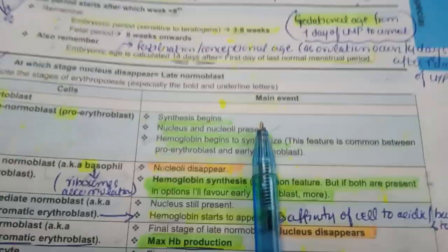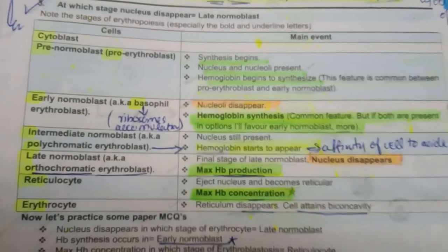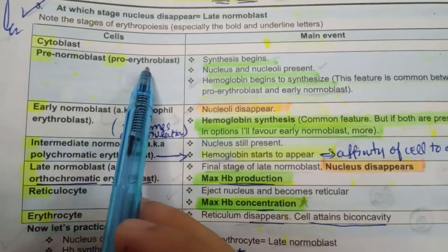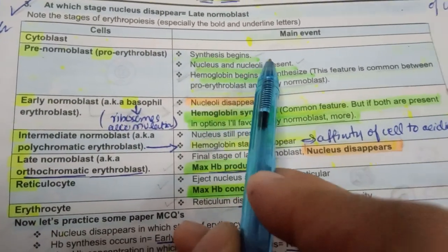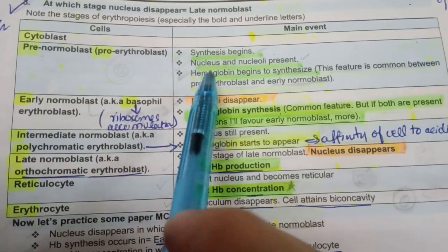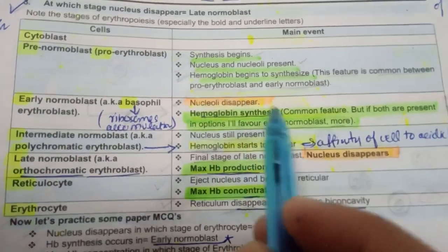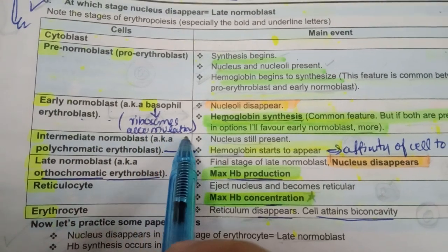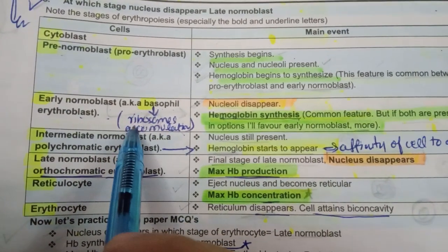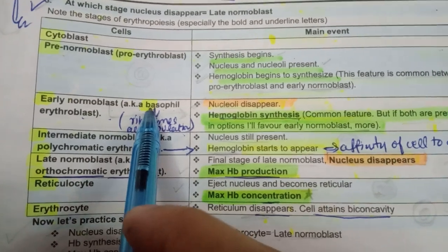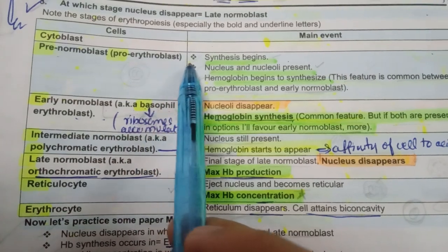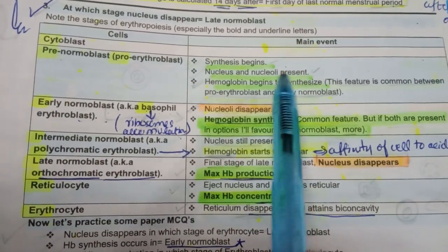The stages of erythropoiesis: the first stage is the proerythroblast — no major event here, just a ball of cells. Then we have the pre-normoblast, also known as pro-erythroblast, where HB synthesis begins. However when MCQ asks where HB synthesis starts, you should prefer early normoblast. In the pro-erythroblast, both nucleus and nucleolus are present.